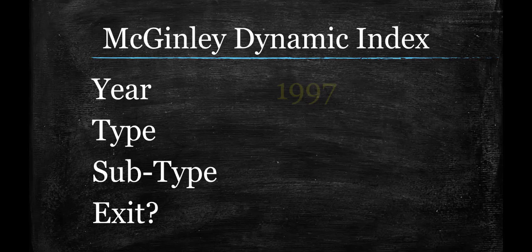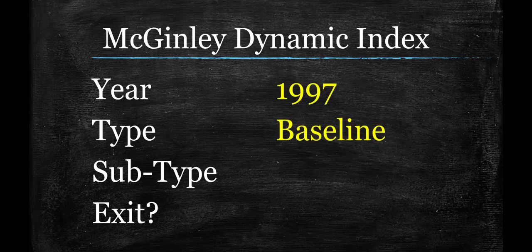Now the McGinley Dynamic Index was invented in 1997 — that part was true. This is a baseline. Baselines, if you test them on their own, will probably not set the world on fire. But if you can find a decent one that does perform well on its own, you can start to build a system around it. Don't overfit or anything like that, but discovering a good baseline is worth something. And I don't think most people have heard of the McGinley Dynamic Index, so this is a really good one to talk about.